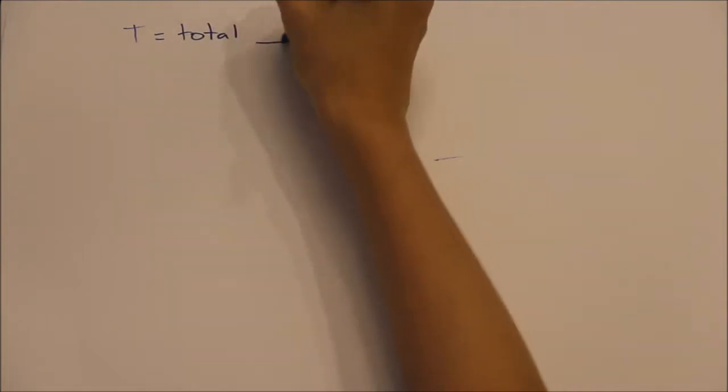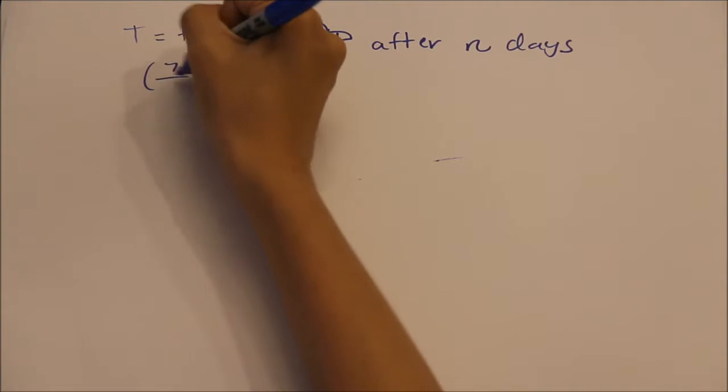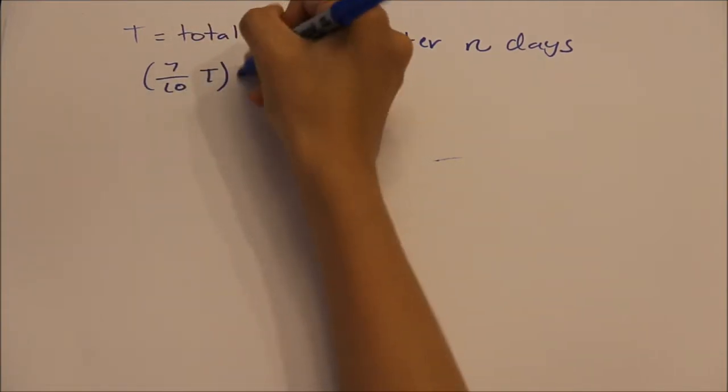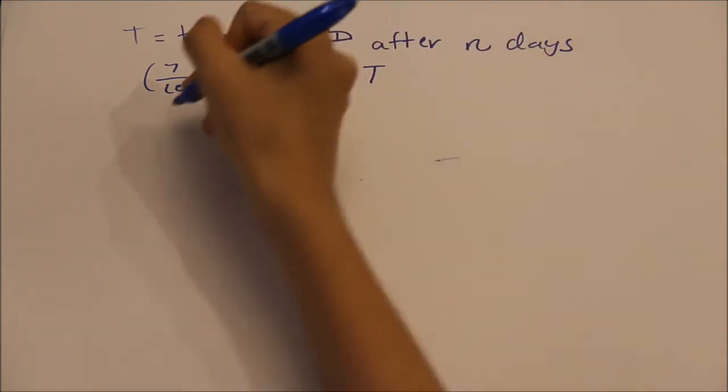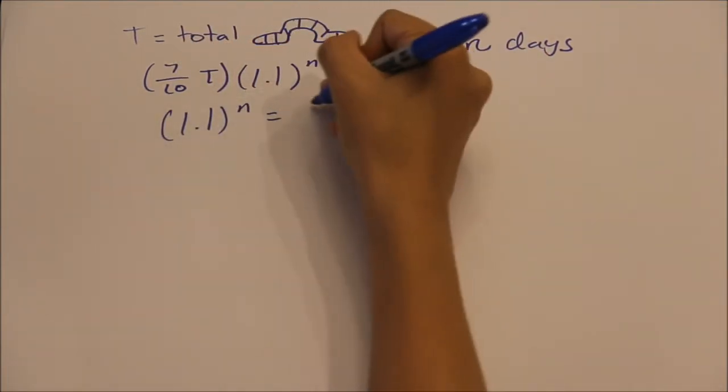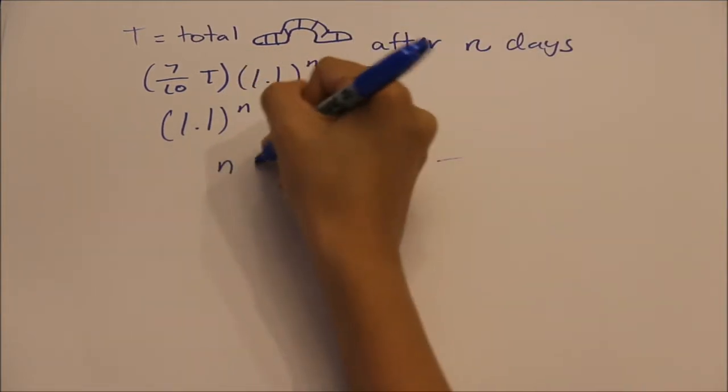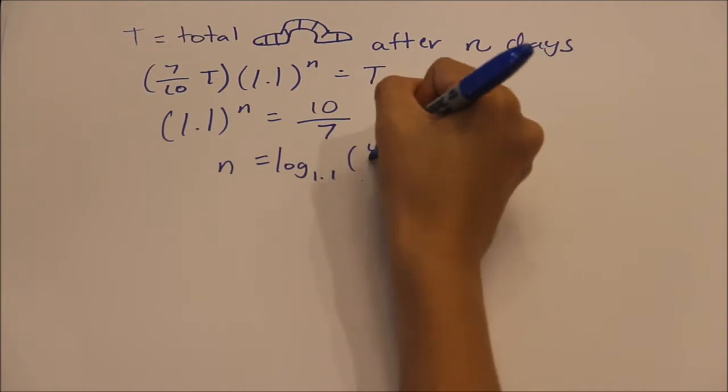Let capital T be the number of cutworms and n be the number of days. Using compound interest, our principal value is 7 over 10 times capital T, as 70% of worms survive the first round of spraying pesticide. Using a simple log function, n equals 3.74225.